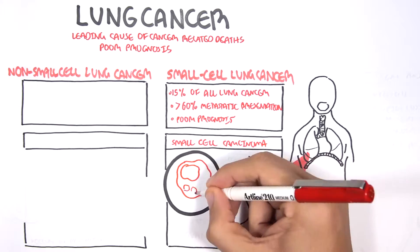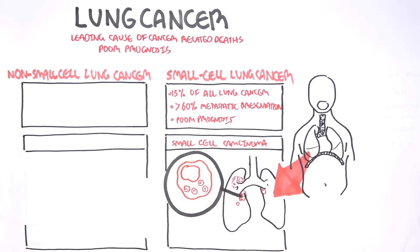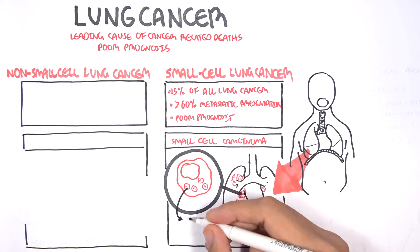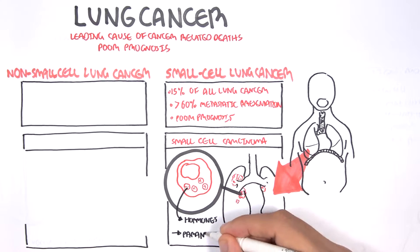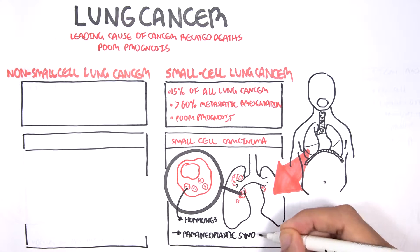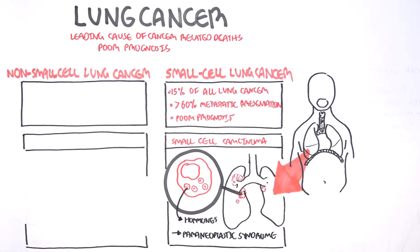Because neuroendocrine cells are involved in this type of cancer, they undergo mutations which allow them to produce hormones, like hormone-like substances that they should not be able to produce. As a result, they release these hormones and it triggers a phenomenon known as the paraneoplastic syndrome, which we will talk about later on.